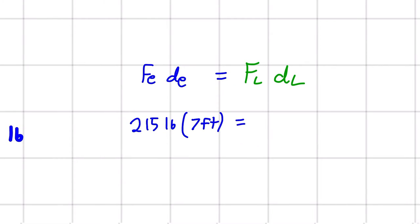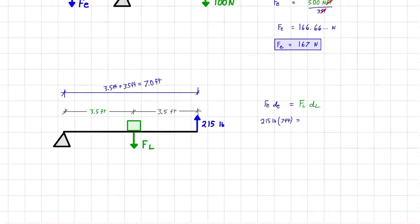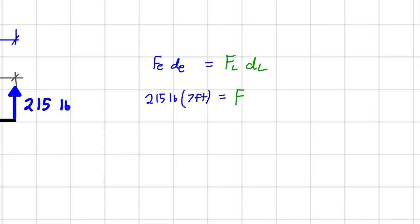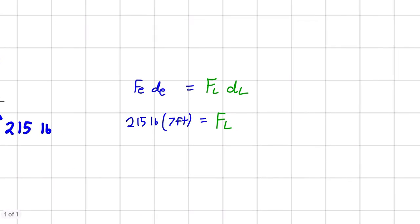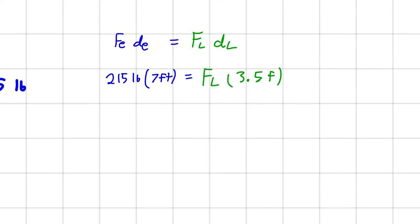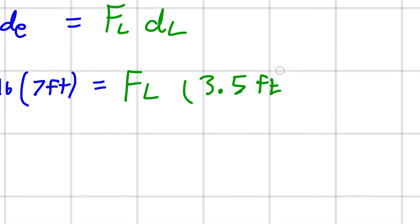And that is equal to FL, is our unknown, times DL 3.5 feet. All right. And again, this was pretty easy. All we have to do is isolate for our unknown. And we're going to do that by bringing this term to the other side of the equation. And it will be a division on the other side.